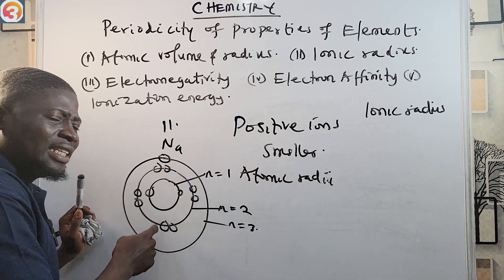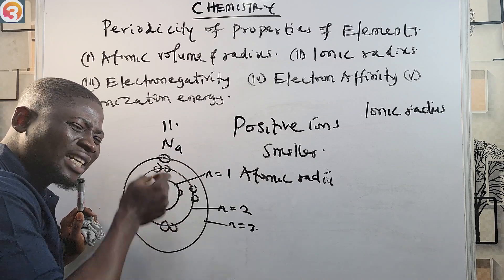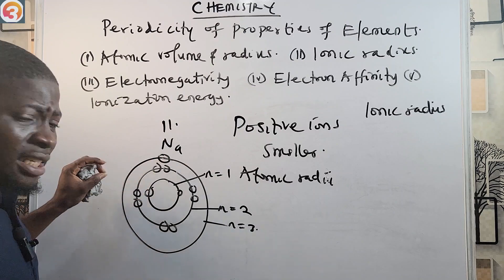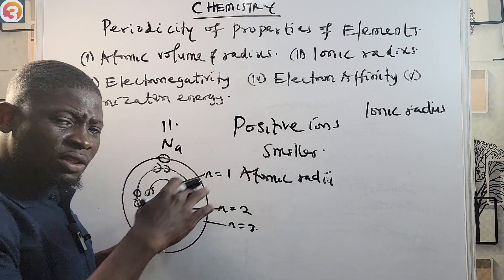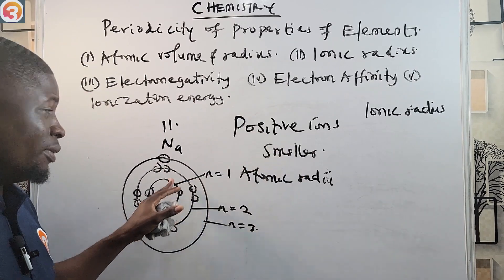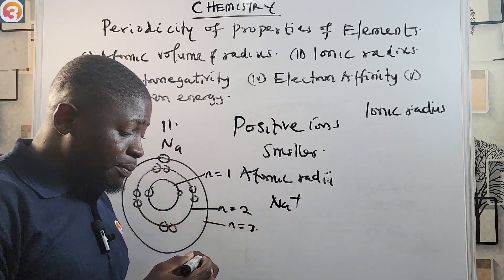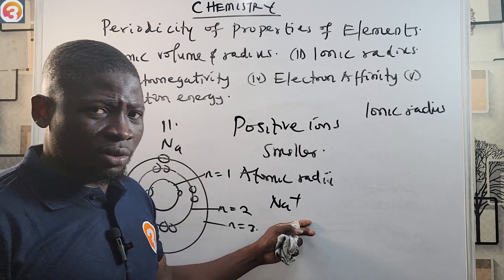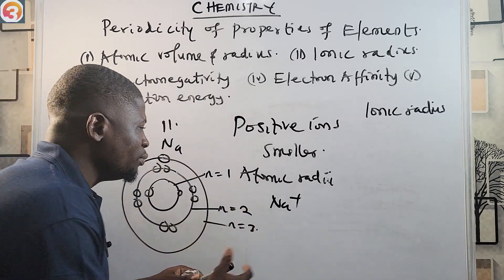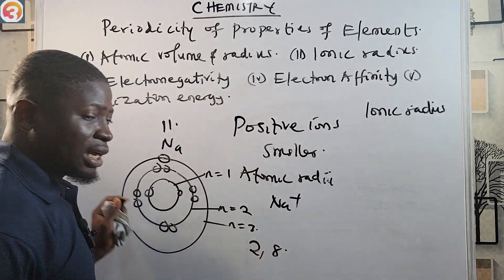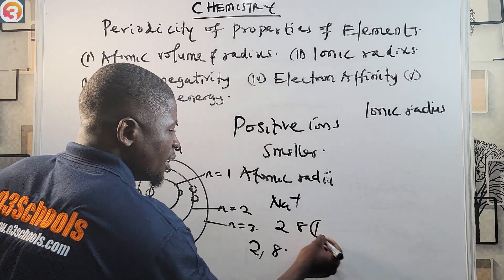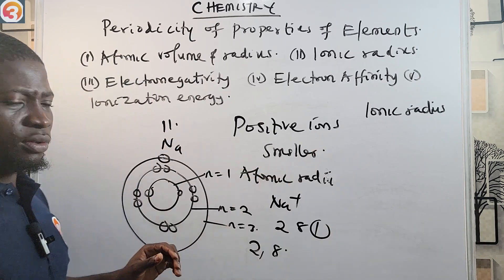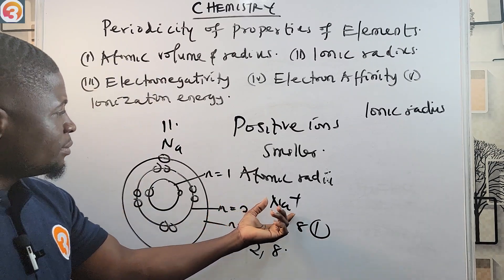Once sodium loses its electron, a positive ion Na⁺ is formed. When you see a positive sign on top of an atom, it means it has lost one or two electrons. So sodium was 2, 8, 1 — the extra electron made it unstable — so it gives it out to become stable at 2, 8.